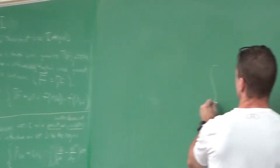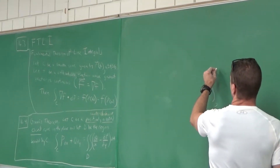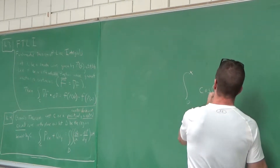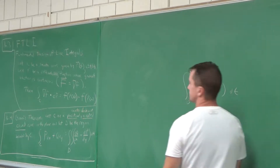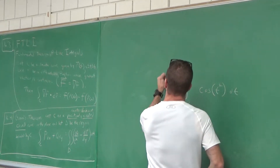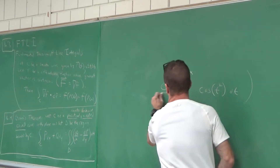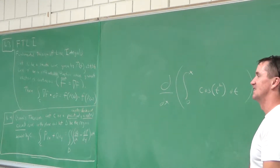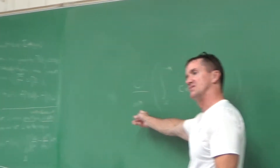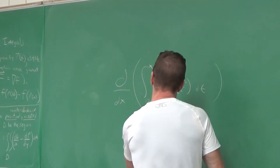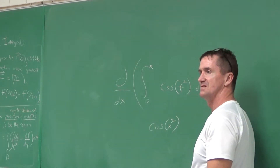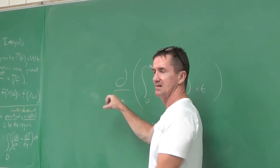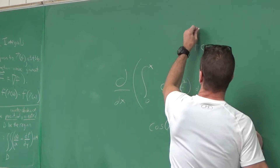Let's go back to the fundamental theorem of calculus. If you had the integral from 0 to x of cosine of t squared dt, and you took the derivative of that with respect to x, you'd just get cosine of x squared. That's the derivative — because you have the integral and the derivative canceling. That's the fundamental theorem of calculus from Calc 1.